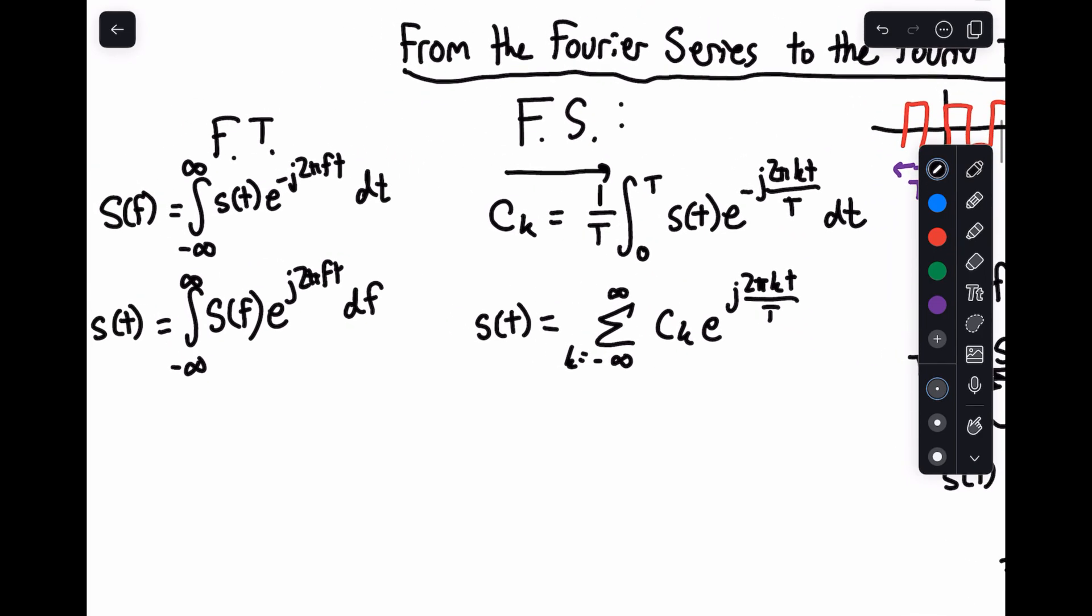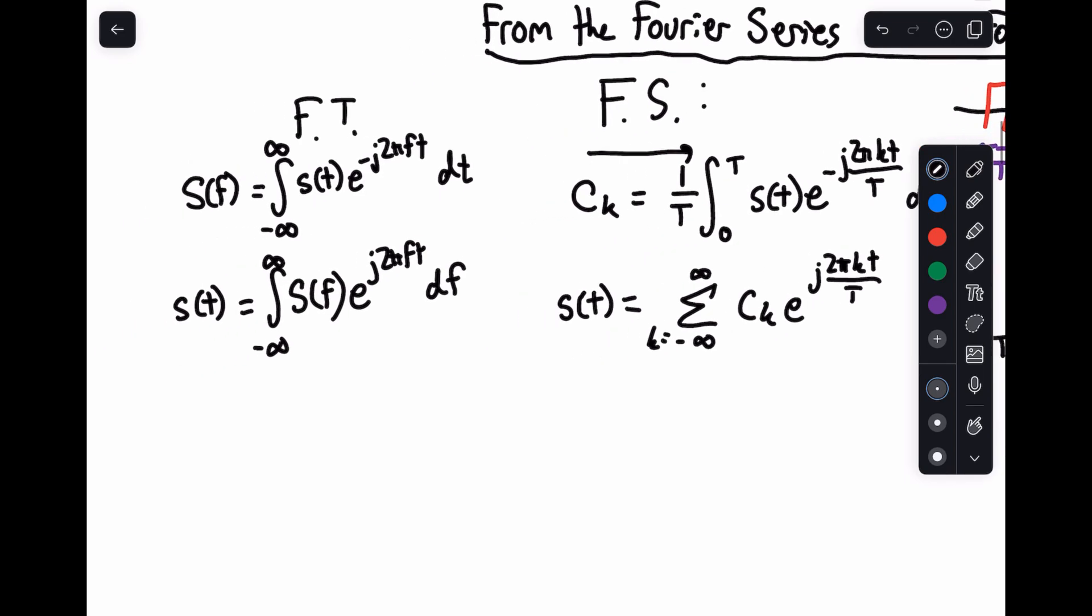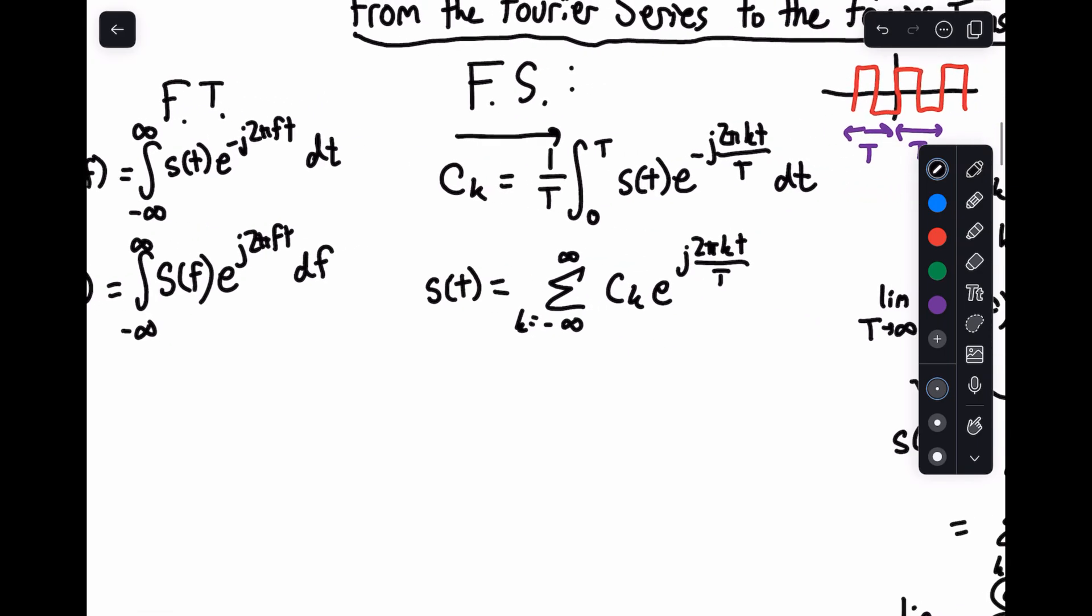So the c sub k part is pretty similar, but the time part, or going back to the time domain, rather than a sum over integers, we now have an integral over a continuum. Because with that k over T piece, we're not just looking at integer components, we're looking at the whole series over time at every possible point in the spectrum.